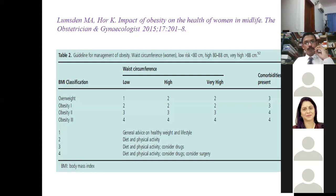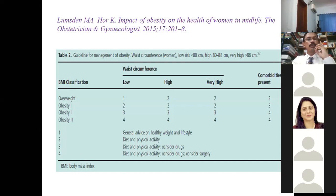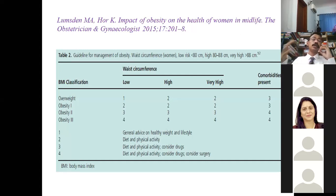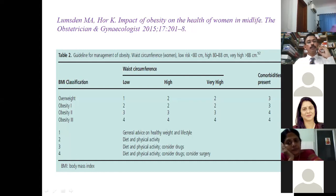A scoring system to manage obesity in PCOS fertility patients considers three factors: waist circumference (low risk: less than 80 cm; high: 80–88 cm; very high: more than 88 cm), BMI, and comorbidities like diabetes, hypertension, and hyperlipidemia. Depending on these, there are four categories: score 1 — general lifestyle changes; score 2 — emphasize diet and physical activity; score 3 — add anti-obesity drugs like orlistat; score 4 — refer for bariatric surgery.